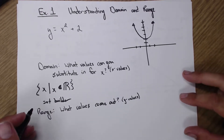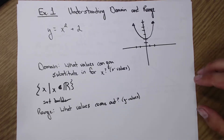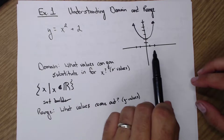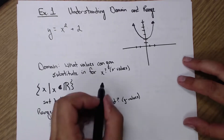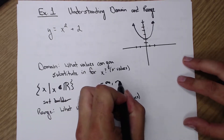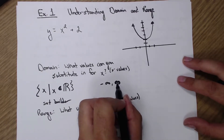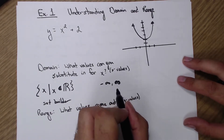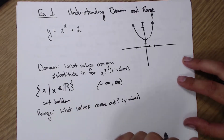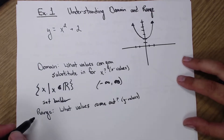We're also going to write this in interval notation. If I'm saying all real numbers, that means I go from all negative numbers to all positive numbers — that's negative infinity to positive infinity. Because I can't actually be at infinity, I have to use a soft bracket, or parenthesis. A hard bracket means we're actually at that location, and we'll see that when we do the range.